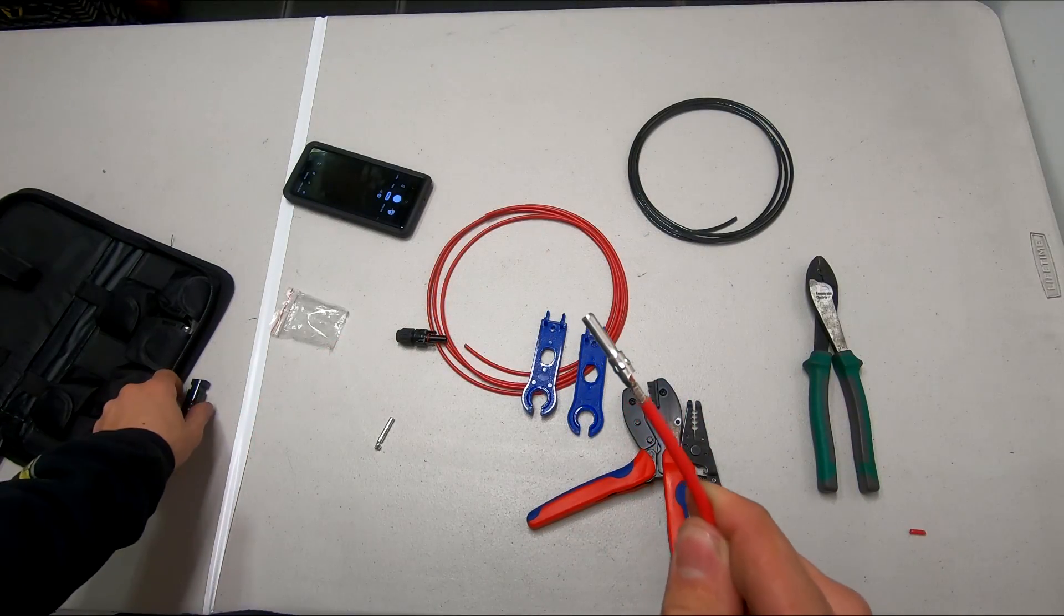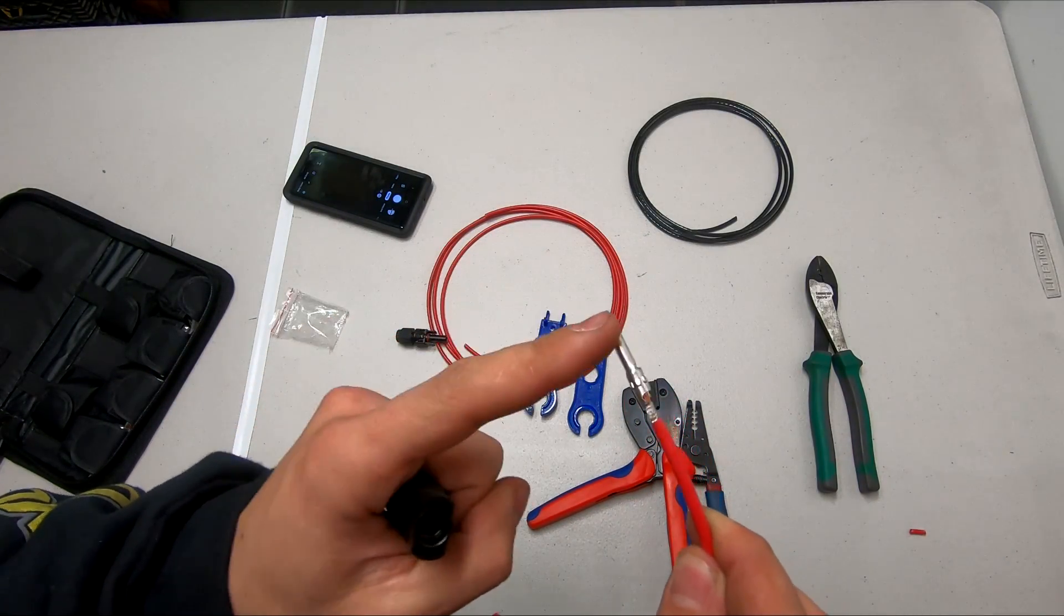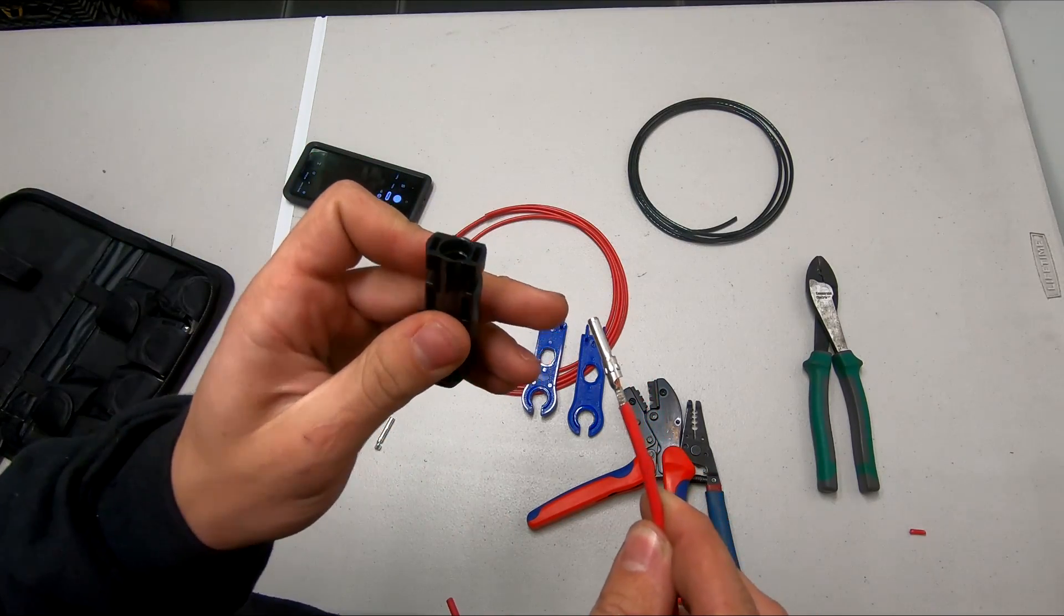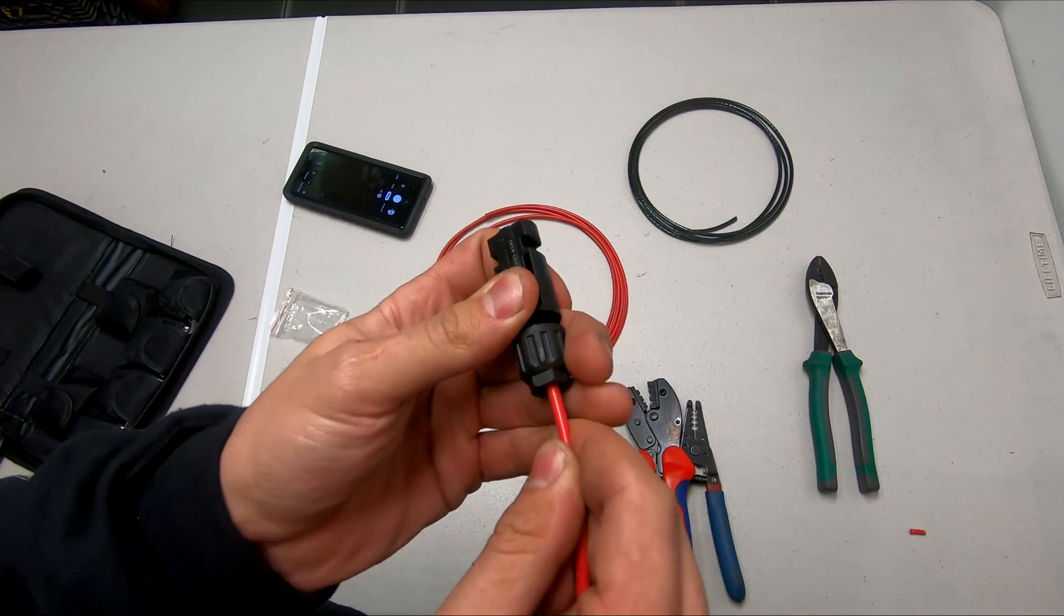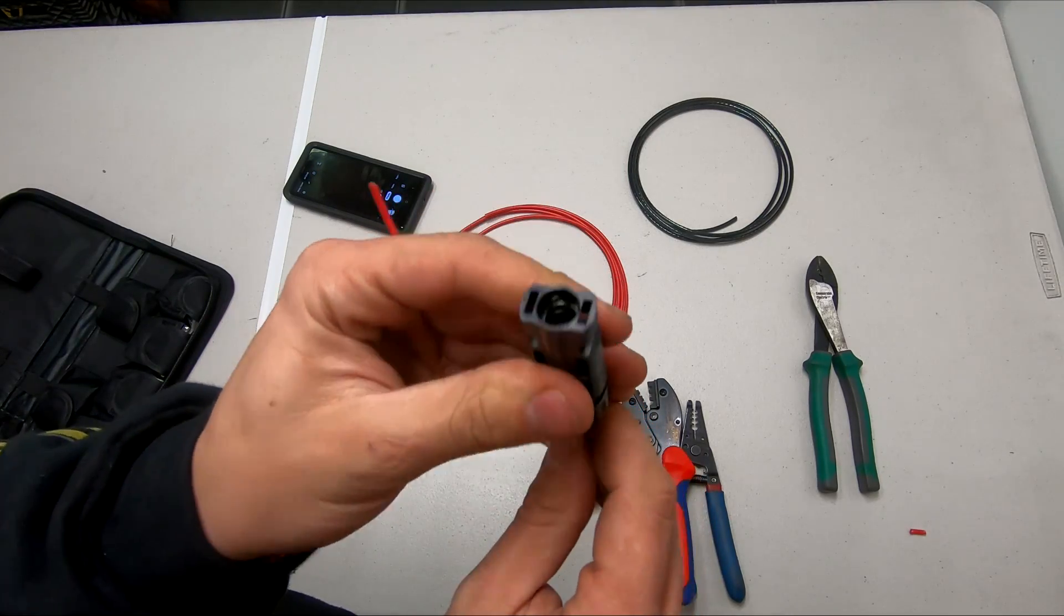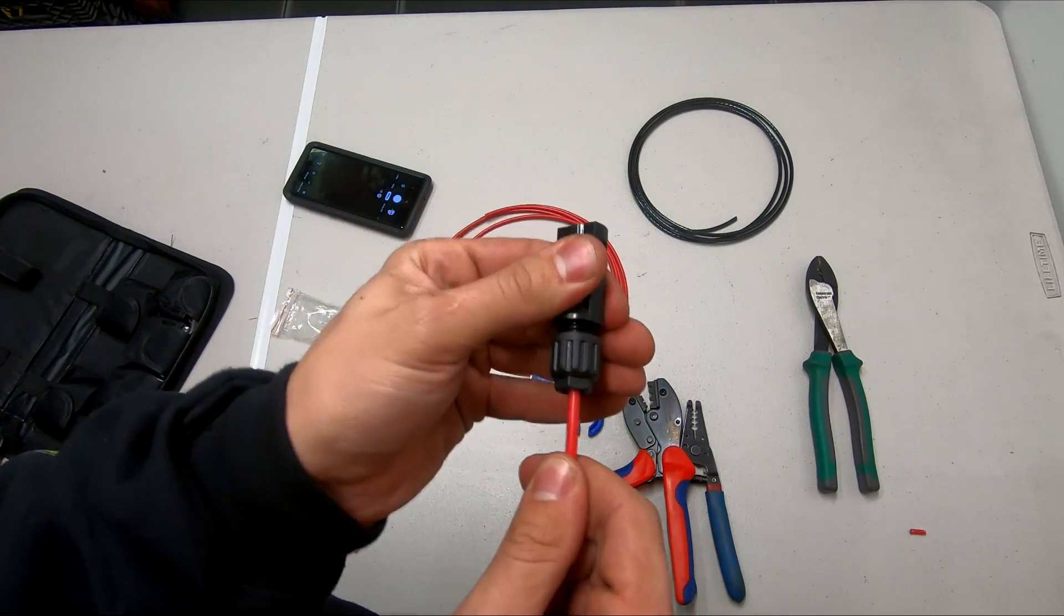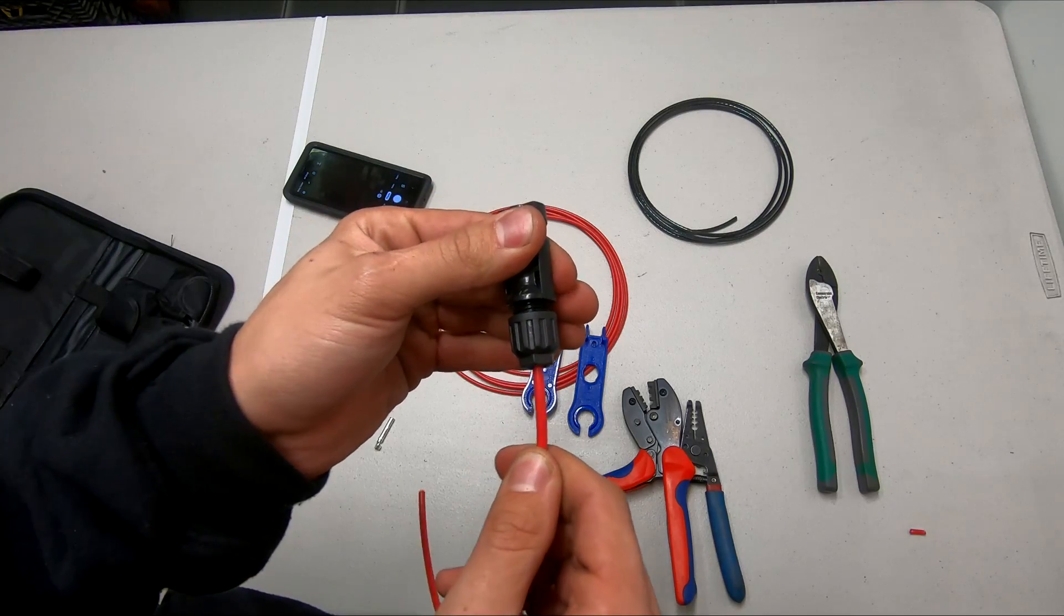Now once you have this crimped on, keeping in mind that your male ferrule goes with your female connector, you're going to take it and insert it all the way into this connector firmly and you'll hear it snap. You shouldn't be able to pull it out of the connector.